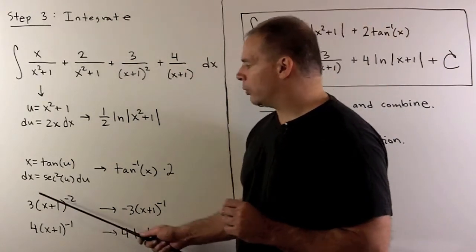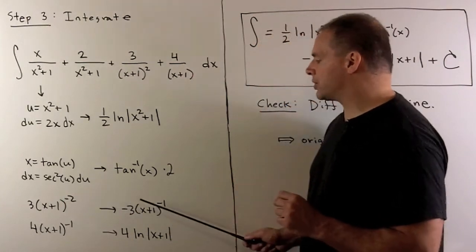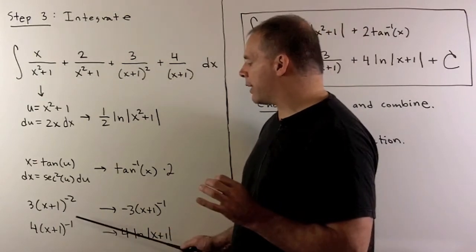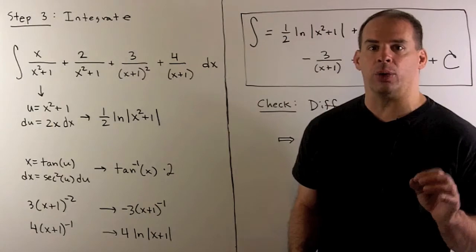Third term, we have 3x plus 1 to the minus 2, which goes to minus 3x plus 1 to the minus 1. And our last term, 4x plus 1 to the minus 1, which goes to 4 natural log absolute value of x plus 1.